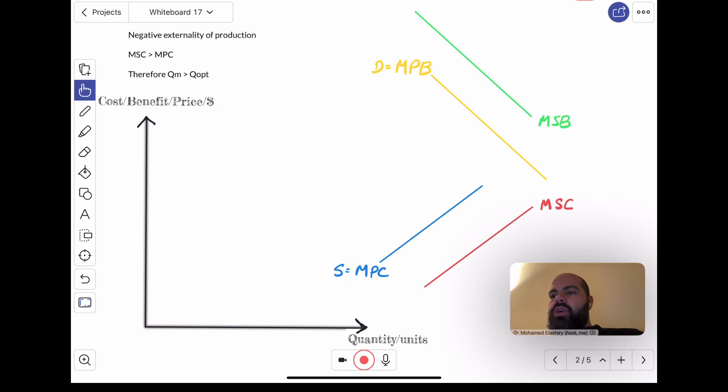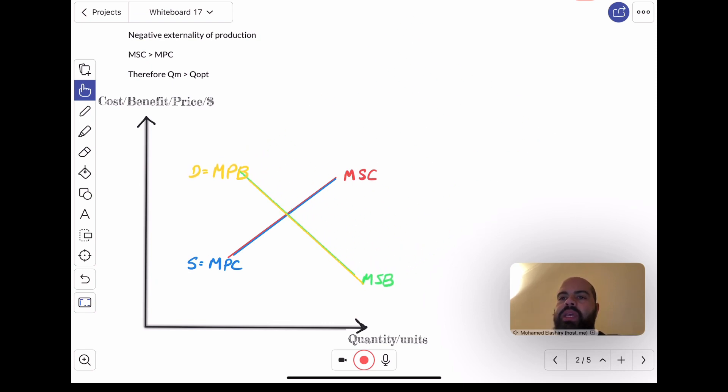Hi, everybody. So, in the previous video, I talked about the situation of allocative efficiency. I talked about how when the MPC and the MSC align, when the MPB and the MSB align